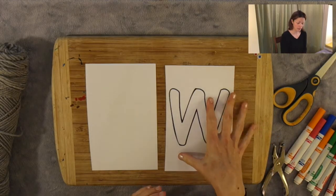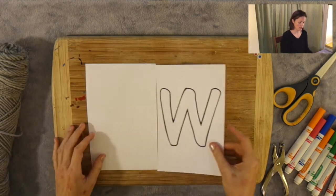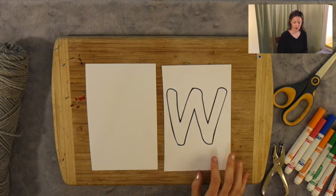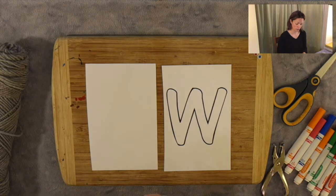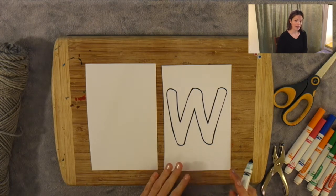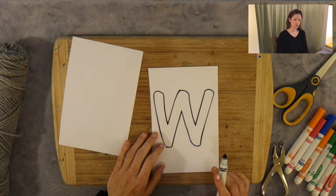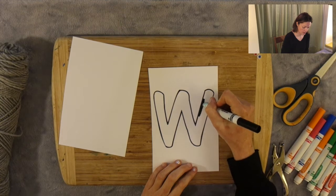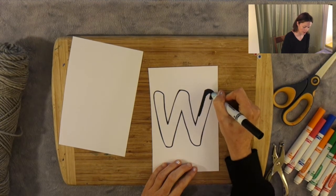Alright, in front of me I have my W template as well as the same size piece of paper that's blank. And all I'm going to be doing right now is taking a very dark marker. I'm going to use black. You could also use a dark blue or maybe a dark purple. I want it to be dark for a reason. So make sure you choose something that's a little darker, whether it be crayons or a marker. And I'm just going to go in now and I'm going to color my letter W.